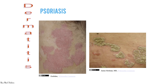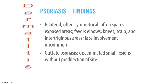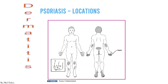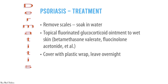Psoriasis findings include bilateral often symmetrical lesions that spare exposed areas, favoring elbows, knees, scalp, and intertriginous areas; face involvement is uncommon. Guttate psoriasis presents as disseminated small lesions without predilection for specific sites. Locations include scalp, head, hands, back, shins, and genital areas. Treatment involves removing scales and soaking in water, applying topical fluorinated glucocorticoid ointment to the skin, covering with plastic wrap, and leaving overnight.